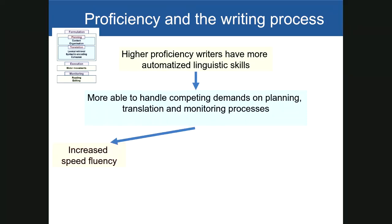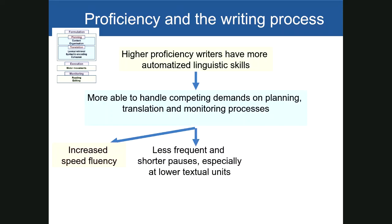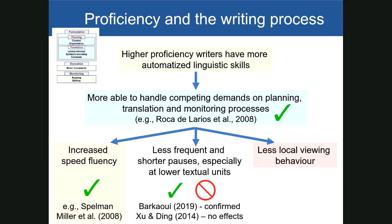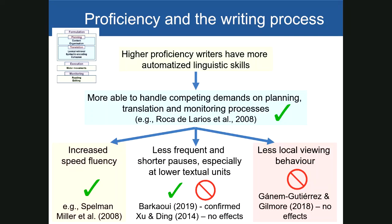We assumed that higher proficiency writers would be more able to handle the competing demands of planning, translation, and monitoring processes. As a result, we expected increased speed fluency in writing, also less frequent and shorter pauses — especially at lower textual units — because from previous research we know that at lower textual units there is a greater likelihood that participants engage in linguistic encoding processes. We also expected less local viewing behavior, and a more global viewing behavior. Previous research found some confirmation for predictions about internal cognitive processes and speed fluency, but results for pausing were mixed, and the single study that investigated the relationship between proficiency and eye-gaze behavior yielded null findings.